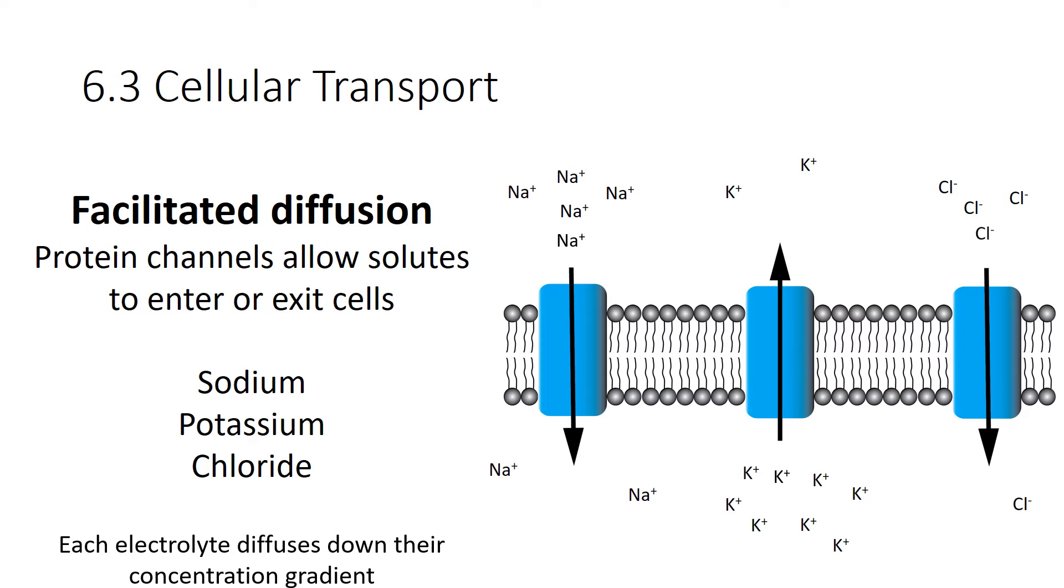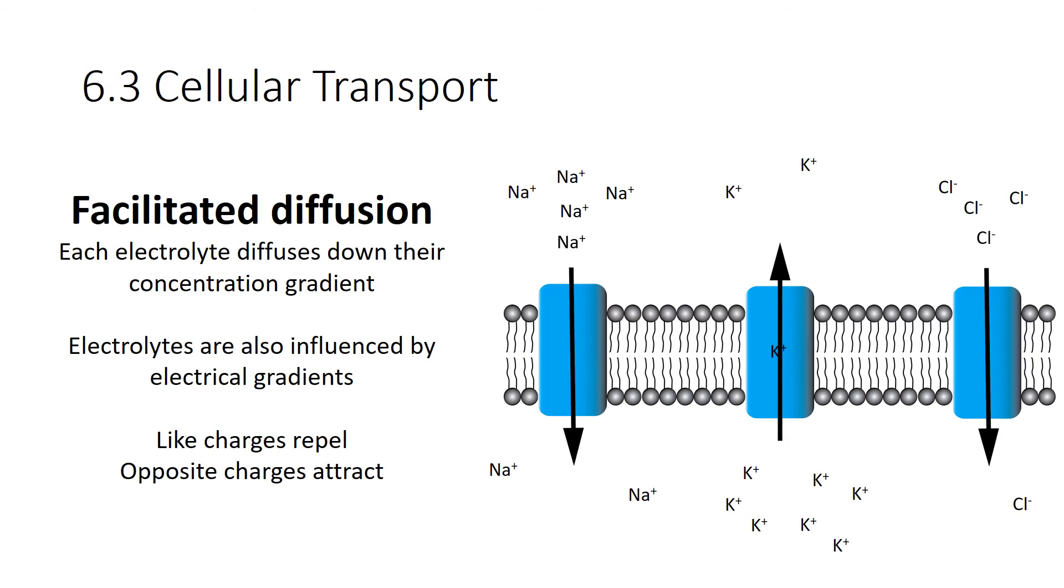Now, each one of these electrolytes will diffuse down their concentration gradient independently of each other up to a point. Here's what happens. Each electrolyte will diffuse down its concentration gradient independently of itself, also known as its chemical gradient. However, electrolytes are also influenced by electrical gradients as well. Remember, electrolytes are ions, which are charged particles. And we know that like charges repel and opposite charges attract. So, if you start getting a whole bunch of cations on one side of the membrane, that's also going to affect the diffusion of these electrolytes across these membranes by traveling through their protein channels.